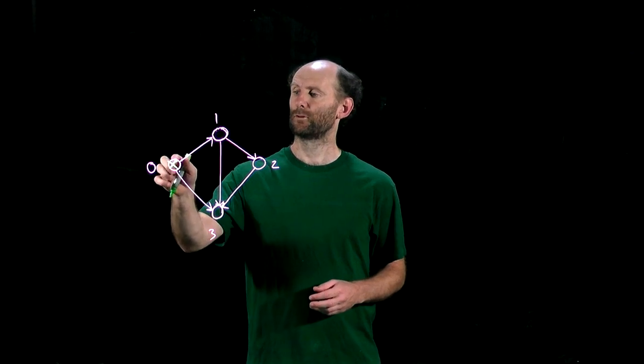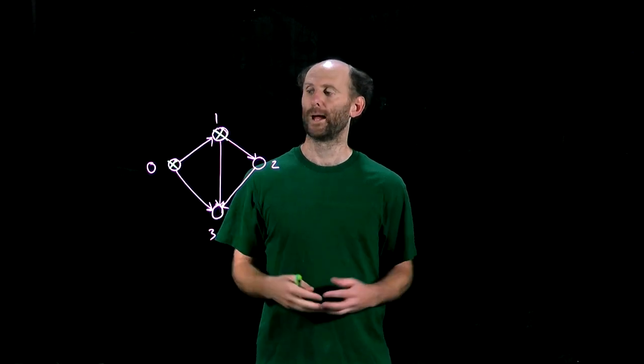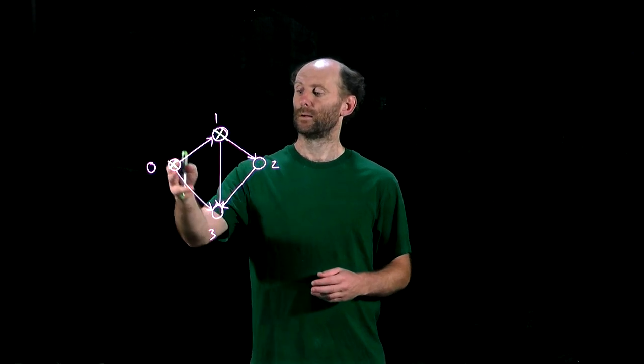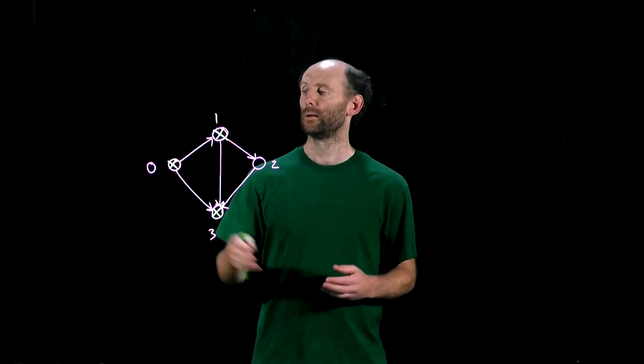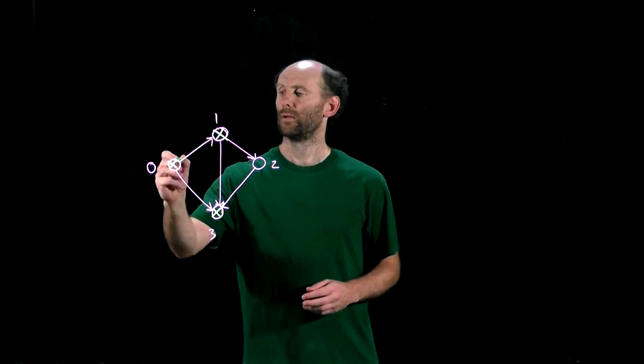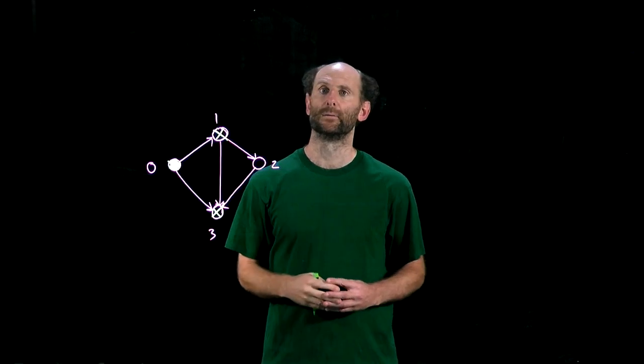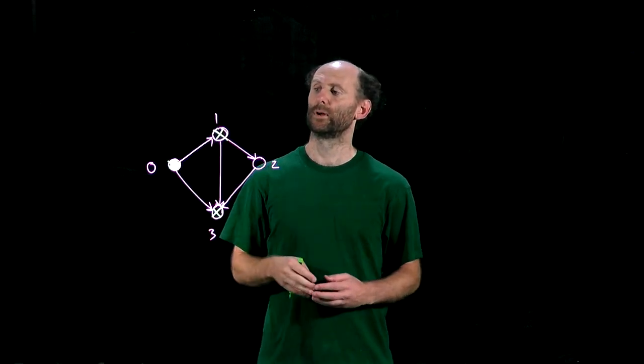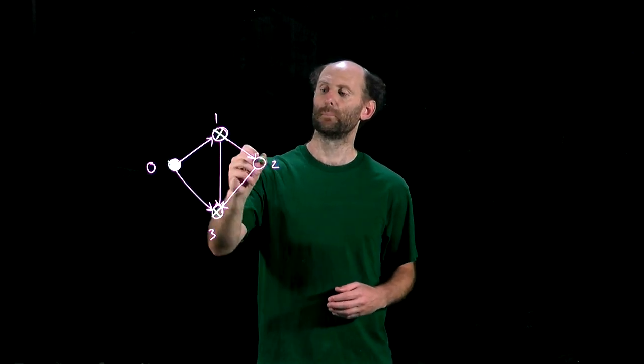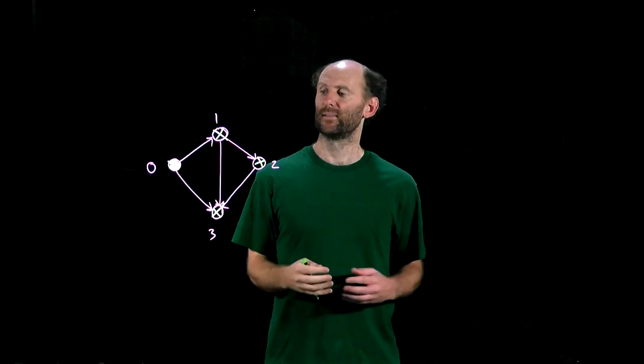We look first for a gray node. Here's a gray node, so we choose that and visit its white out-neighbors. We choose this gray node, look for white out-neighbors, find one, and visit it. Again we choose a gray node and look for white out-neighbors — let's say we choose node 0 again. It has a white out-neighbor, so we choose that. Next, we choose 0 again: it has no white out-neighbors, so we color 0 black. Then we choose node 1, which has a white out-neighbor, and we visit it, continuing until every node has turned black.